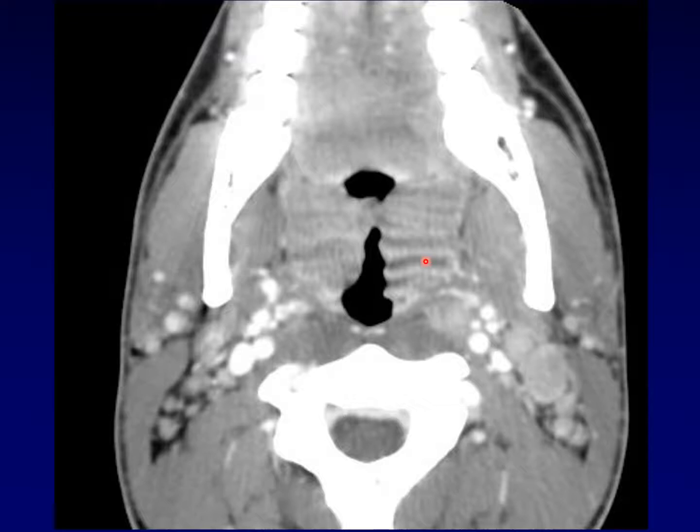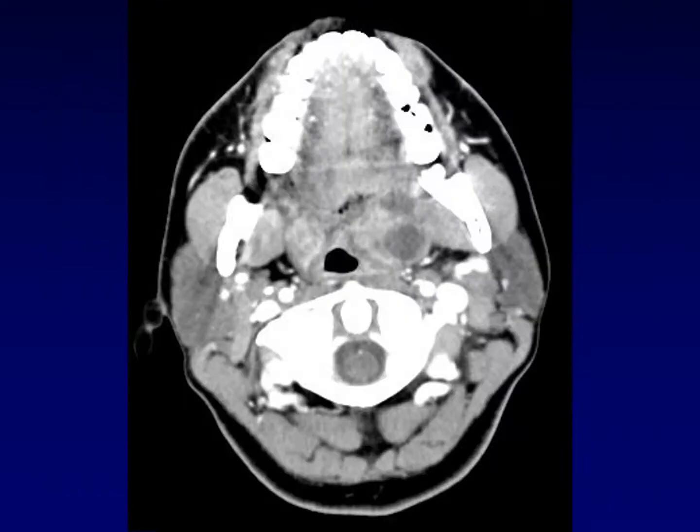Interspersed between the enhancing areas are edematous areas of parenchyma within the gland, and that's what causes this tiger stripe appearance in the setting of acute tonsillitis. Usually these patients are never imaged because the diagnosis is clinically obvious. The presence of reactive adenopathy is unsurprising in this case.